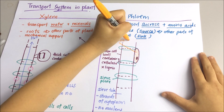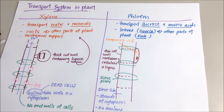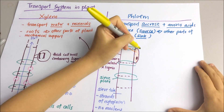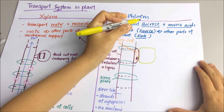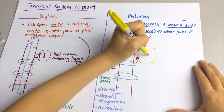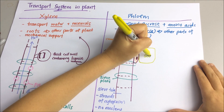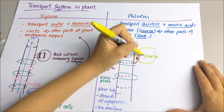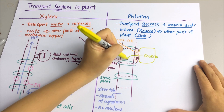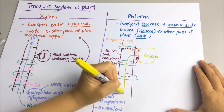These cells are kept alive and supported by the companion cells. Remember, phloem is the food-carrying tube that connects the source to the sink.